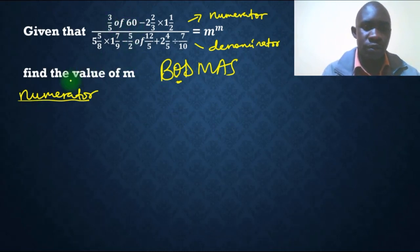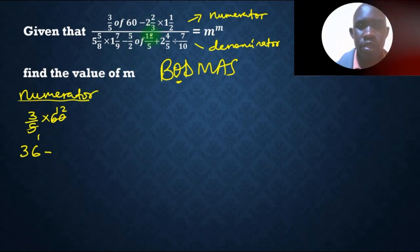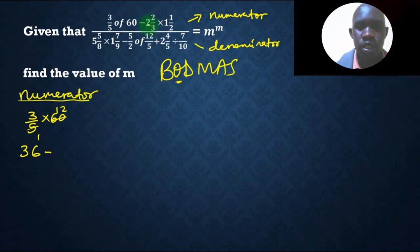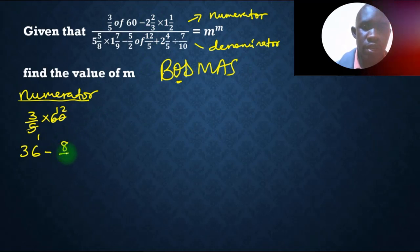So this is the first operator we have to deal with. And that will be 3 over 5 times 60. Of is the same as multiplication. So we shall end up getting by 5, 1 by 5, that will be 12. So this is 36, so we have 36 minus improper fraction.